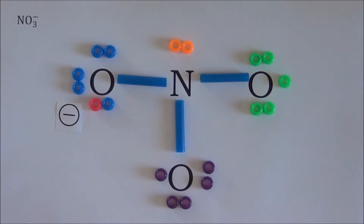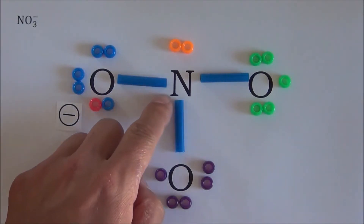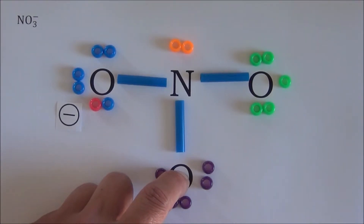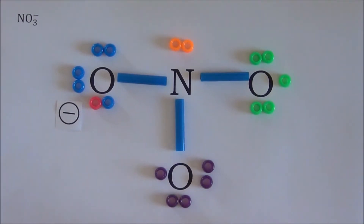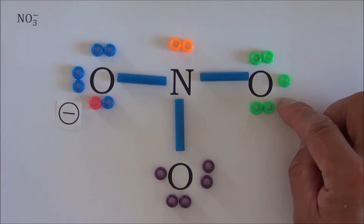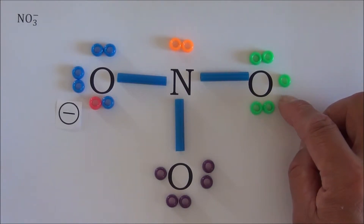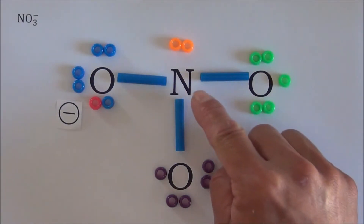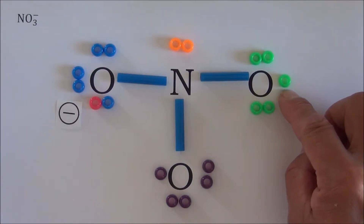The next step is to make sure every atom has an octet or extended octet. Because both nitrogen and oxygen belong to the second period, they can only have an octet, not an extended octet. An octet means an atom should have eight octet electrons next to it. Octet electrons are the electrons placed next to that atom, including lone pair electrons and shared pair electrons. A single unpaired electron should also be counted as an octet electron.